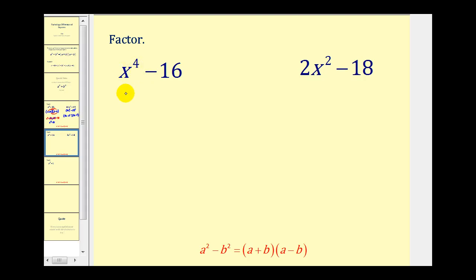Now x⁴ is a perfect square because x² raised to the second power does equal x⁴, and of course 4 to the second does equal 16. So our two factors would be x² plus 4 and x² minus 4.